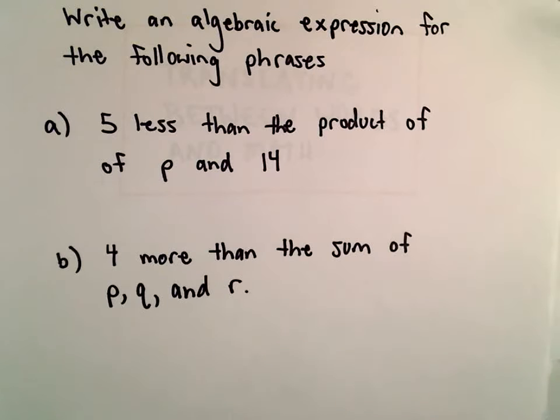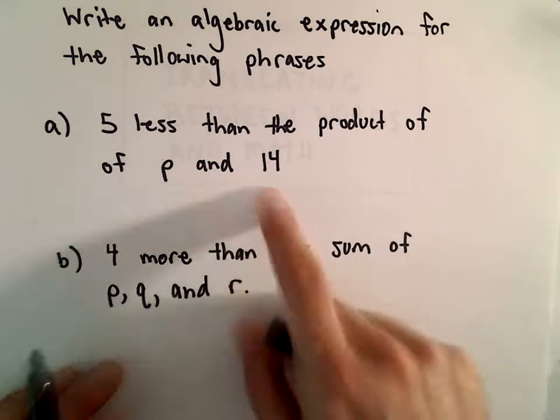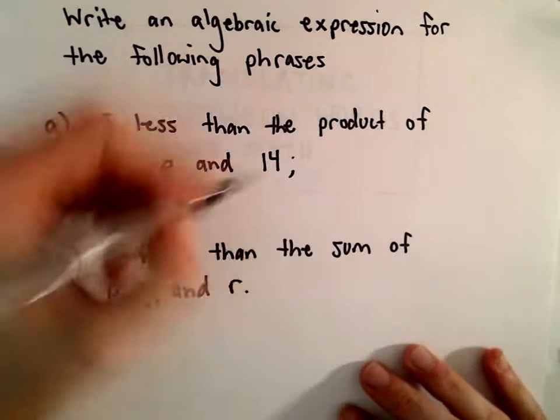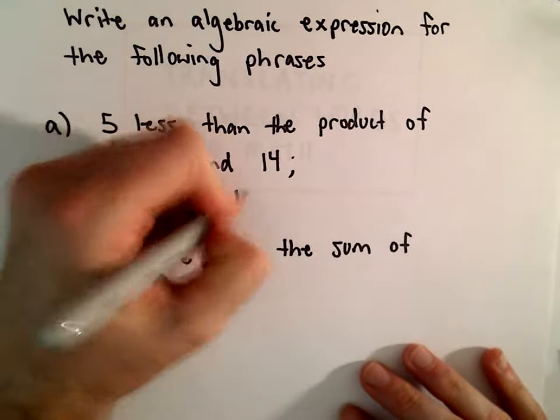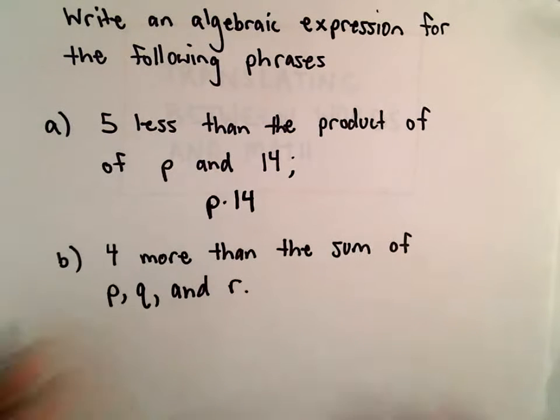The product of P and 14 we could write as P times 14, or P multiplied by 14.